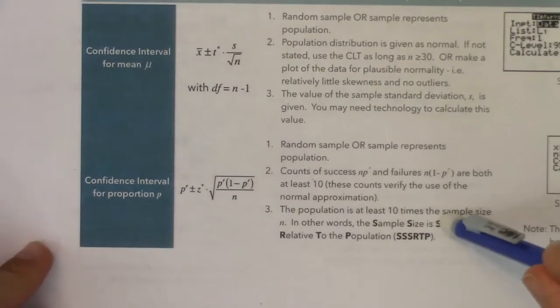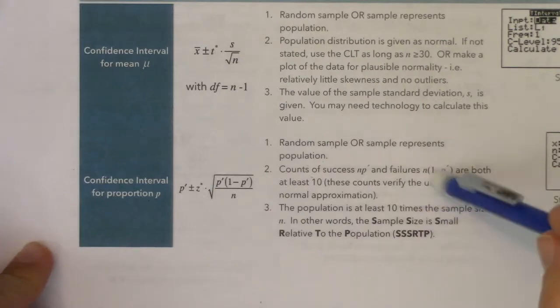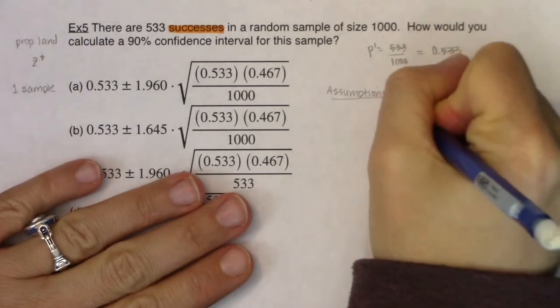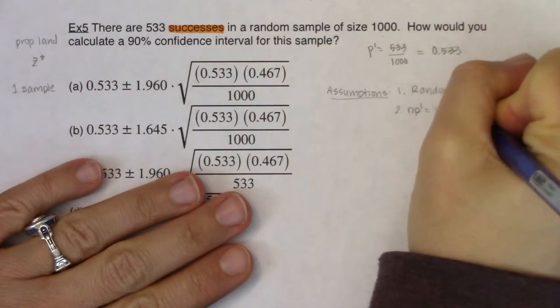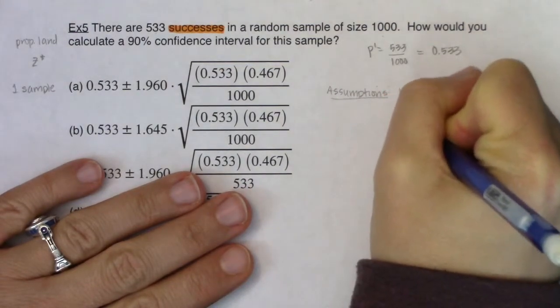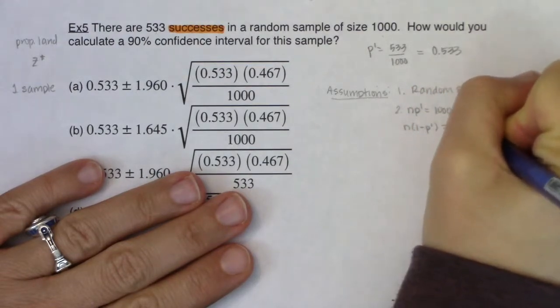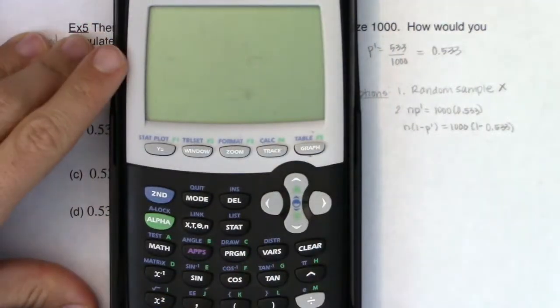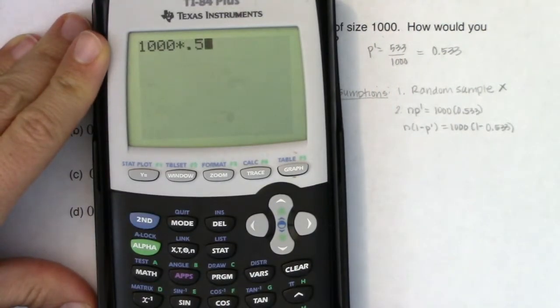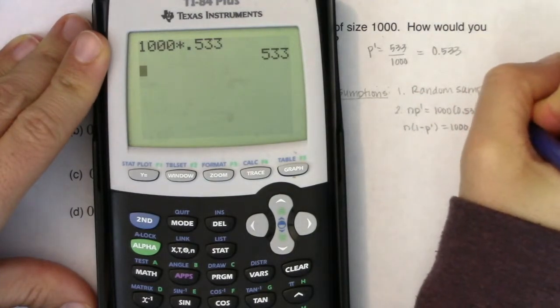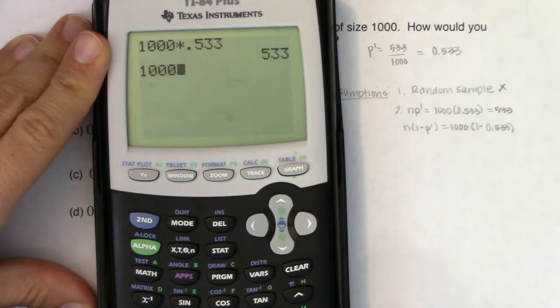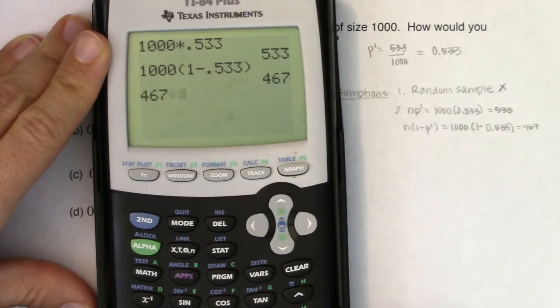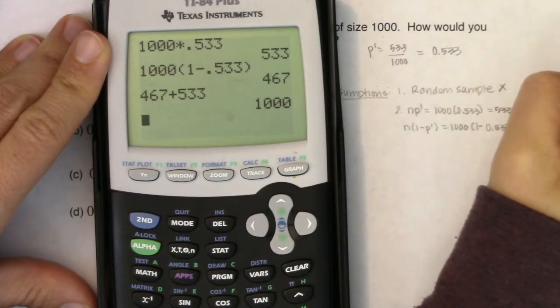The next thing I need to check is successes and failures. Did I have at least 10 successes and at least 10 failures? And that's the NP prime and N(1 minus P prime). So let's go crunch those numbers. In this case, NP prime will be 1000 times 0.533. And N(1 minus P prime) would be 1000 times 1 minus 0.533, the complement. So if I crunch these numbers, I'm looking at 533. If I do 1000 times the complement, I'm looking at 467. Does that add up to my sample size? That's great. So I've got successes and failures checked off.